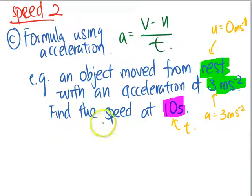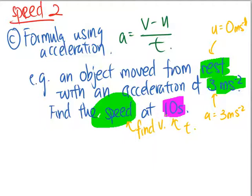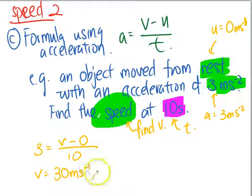As you look at this, find the speed at 10 seconds. What we are trying to find is, in this case here, for this one, the speed at 10 seconds, you are actually trying to find V. Let's substitute in. We got 3 is equals to V minus 0 over 10. So doing some algebraic manipulation, V equals to 30 meters per second. This is very simple here.